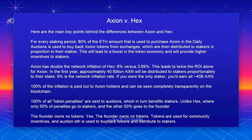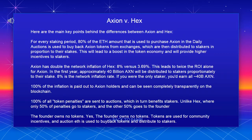100% of all token penalties are sent to auctions, which in turn benefits stakers — unlike HEX, where only 50% of penalties go to stakers and the other 50% goes to the founder. The founder owns no tokens. Tokens are used for community incentives, and ETH from auctions is used to buy back tokens and distribute to stakers.